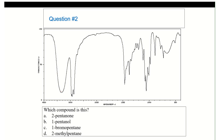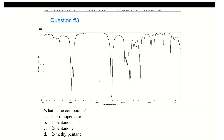Looking at another example: just above 3000 there's a broad peak with nothing in the double- or triple-bonded regions, so you have an alcohol. For another spectrum: something in the double-bonded region, nothing in the triple-bonded region, nothing above 3000 — it's an alkene or a carbonyl. Since the peak is very strong, it has to be a carbonyl — likely a cyclopentanone.